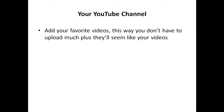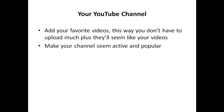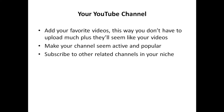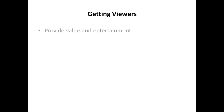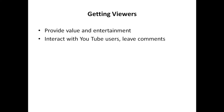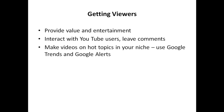Your YouTube channel. Add your favourite videos — this way you don't have to upload much initially, plus they'll seem as though they're your videos. Make your channel seem active and popular. Subscribe to other related channels in your niche. How can you get viewers? First, make sure your videos provide value and entertainment. Make sure that you interact with other YouTube users — leave comments on their videos. Make videos on hot topics in your niche.